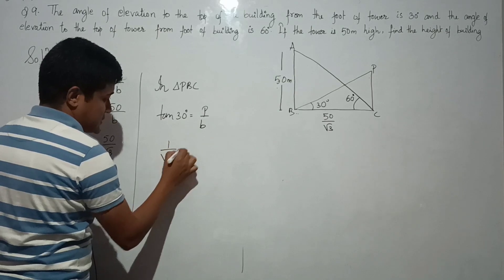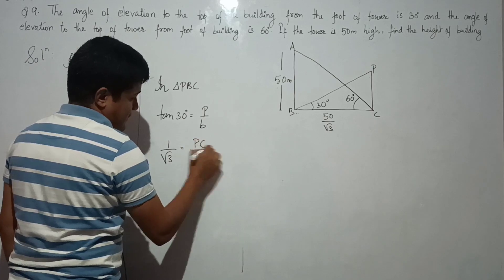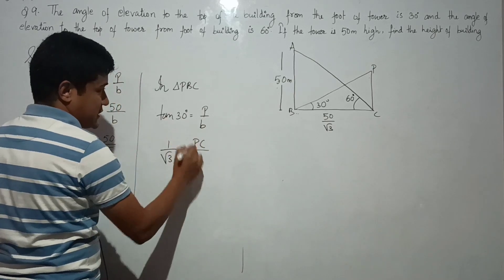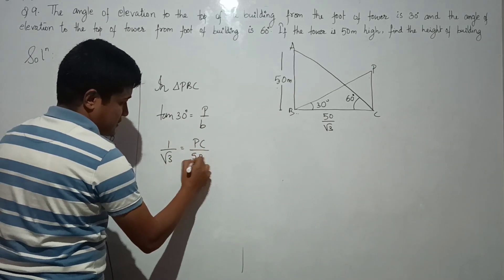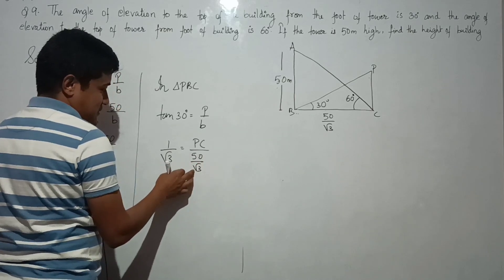1 by root 3, and the perpendicular we don't know—that is PC, or the height of the building which we need to find out, and base is 50 by root 3. You can just send this to